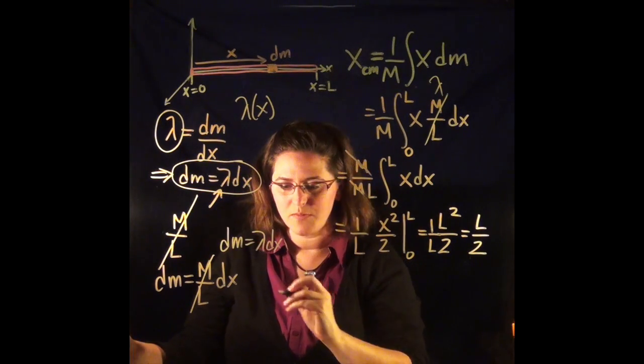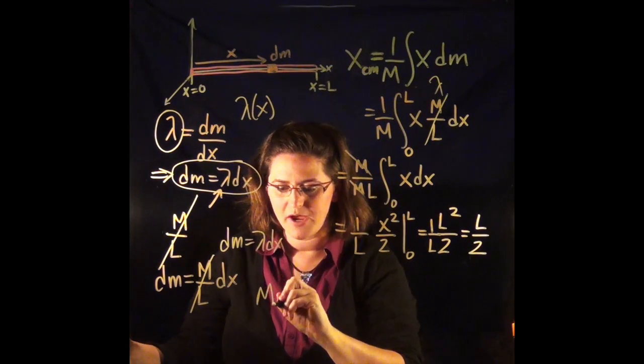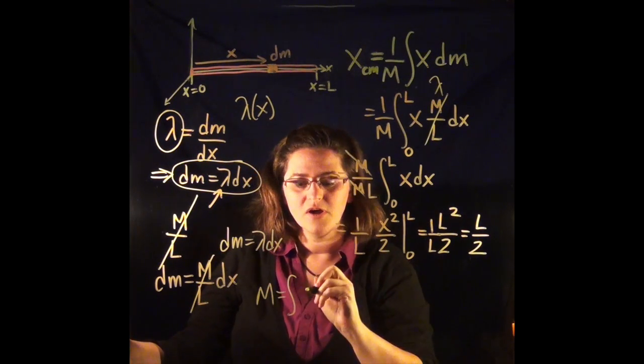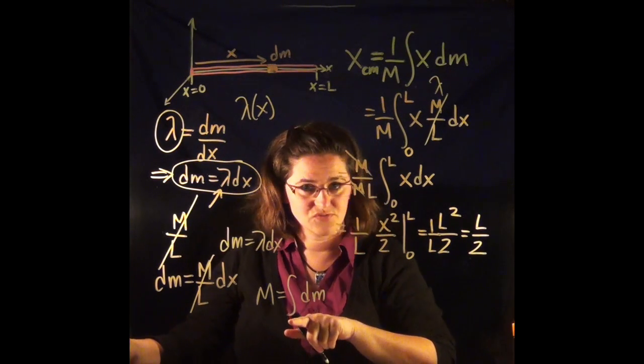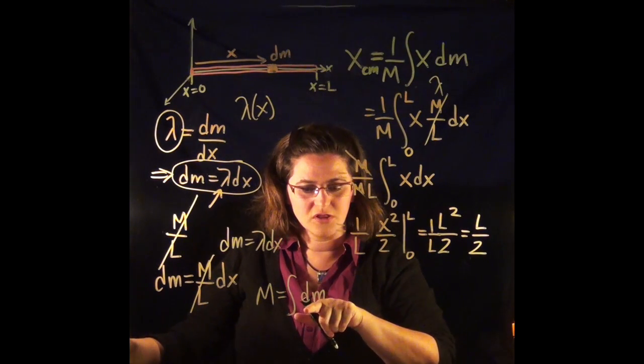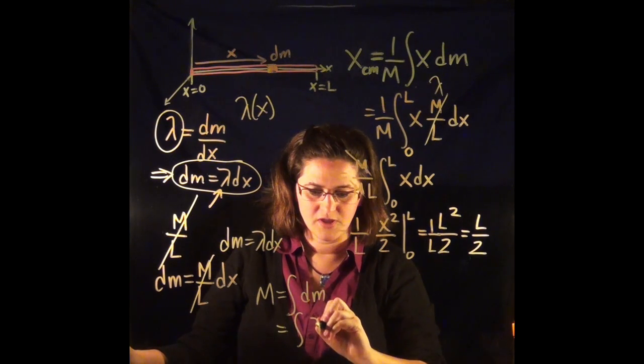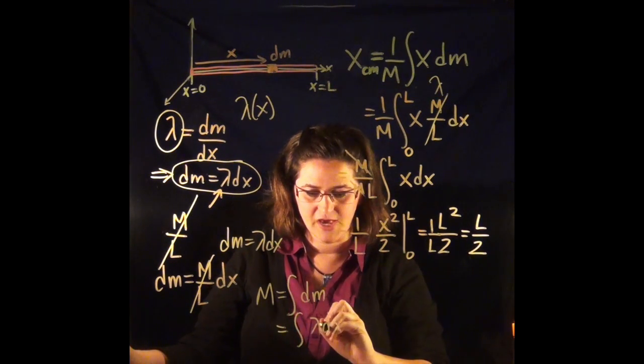So to find the total mass, the total mass, watch how I say this, is the sum of all of the little masses. The integral sign is literally a sum of all of the small masses. And that would be equal to lambda dx.